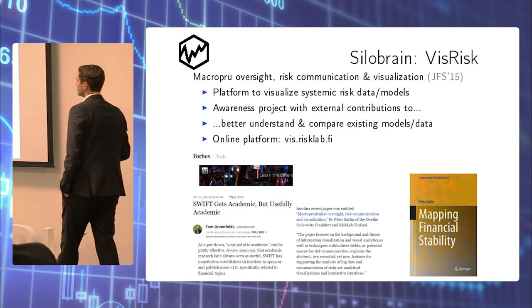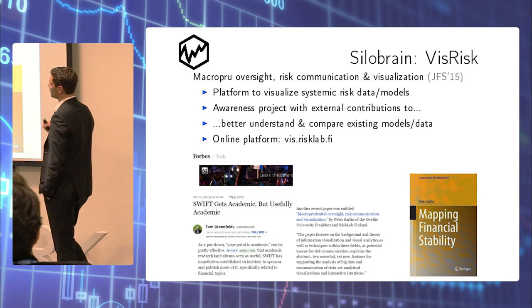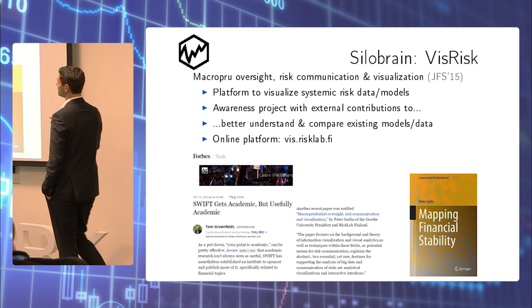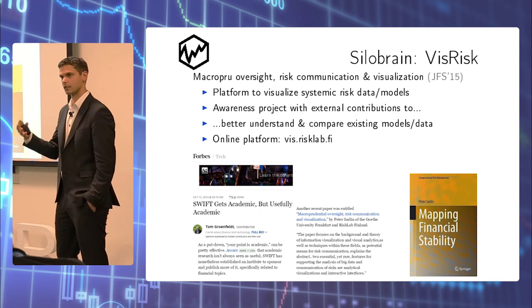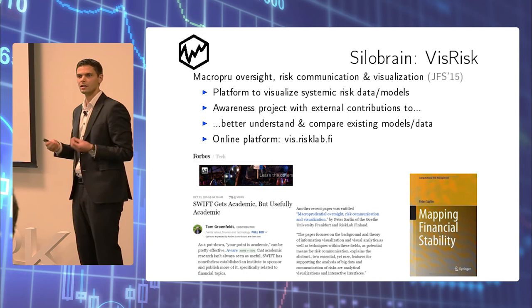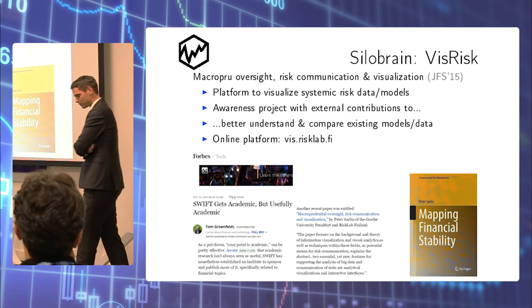The second project is related to a research project funded by the Swift in 2013. Within that project, we built an interactive visualization platform. The idea with that was to run an awareness project where we were putting systemic risk models and data side by side in order to better understand the models themselves, and in order to be able to compare existing models and data with each other. You have a large number of models measuring the same thing but giving quite different output. And I guess this relates quite well to Petra's SIRTO project measuring systemic risk.